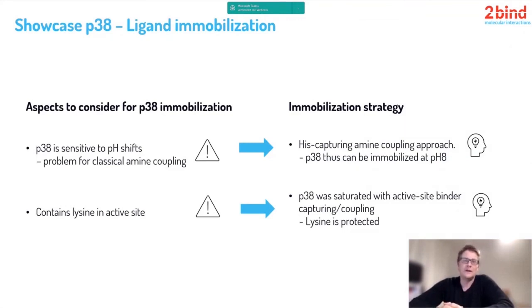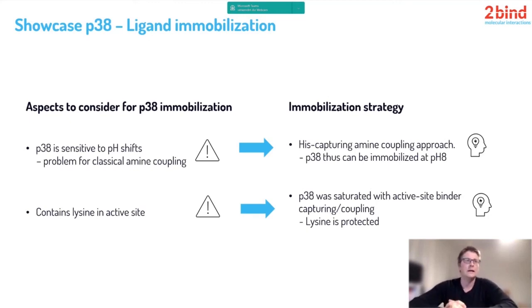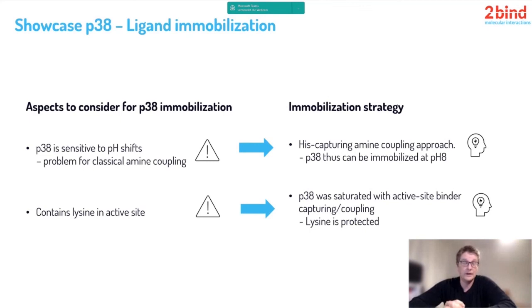Coming to the ligand immobilization, which is one of the most important steps in the complete process. One should really think about what the target is and what it can tolerate. For p38 immobilization, it's known that p38 is sensitive to pH shifts, which is a problem for classical amine coupling — concentrating the protein via a pH below the isoelectric point may simply harm the protein when it gets attached. Therefore, we chose a combination of His-capturing the protein followed by amine coupling, which allows immobilization at pH 8 — clearly the better choice for p38.